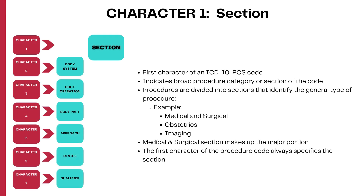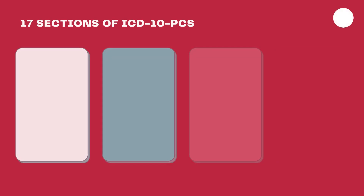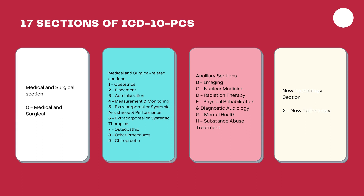The first character always indicates the broader procedure category or section of the code. There are different section values like medical and surgical, obstetrics, and imaging, for example. Medical and surgical makes up the major portion of the entire PCS coding system. These are the 17 sections of the ICD-10 PCS codes, and the first one — medical and surgical — is the major portion of the PCS coding system.